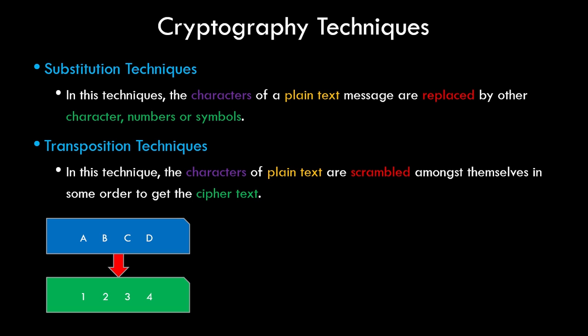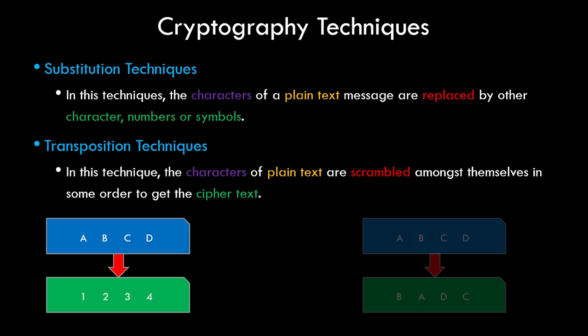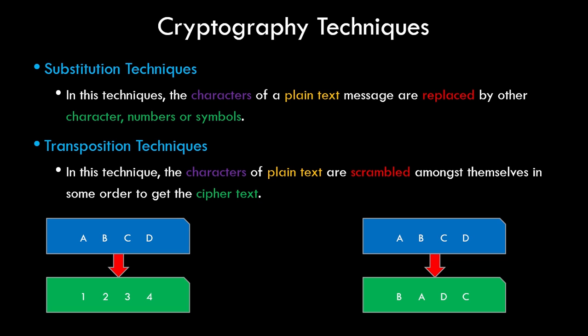The second technique is the transposition technique, where the plain text characters are scrambled in a certain pattern to get the ciphertext. For example, the characters A, B, C, D are swapped and you get ciphertext B, A, D, C — consecutive positions A, B are swapped to B, A and C, D are swapped to D, C. This is an example of transposition technique.